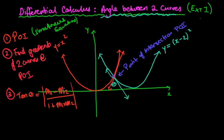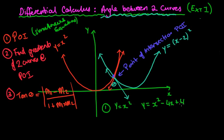It doesn't matter which way you put the gradients around because we're taking the absolute value — if it's negative it becomes positive. We do a shift-tan to find the angle. For the first example, we've got y equals x squared and y equals x squared minus 4x plus 4, which is (x minus 2) squared expanded.